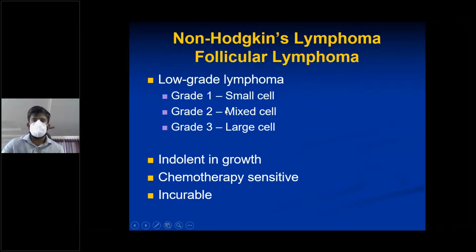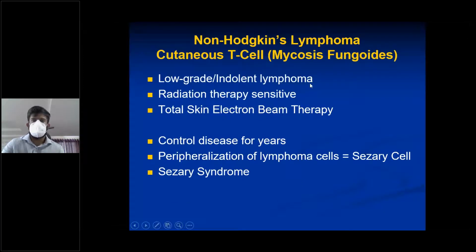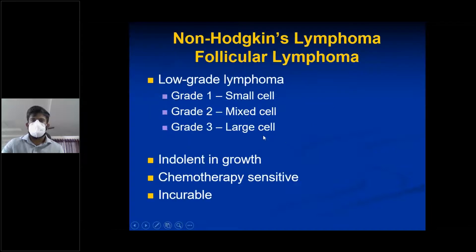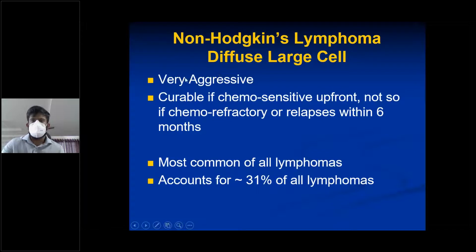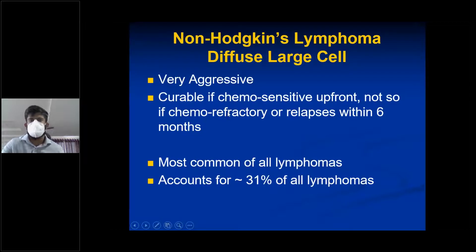Both follicular lymphoma and cutaneous T-cell lymphoma are indolent. Follicular lymphoma is chemotherapy-sensitive; cutaneous T-cell or mycosis fungoides is radiation therapy-sensitive. Diffuse large B-cell lymphoma is very aggressive — it is curable if chemosensitive up front, but not if chemorefractory or if it relapses within 6 months, in which case it is very aggressive and eventually fatal.